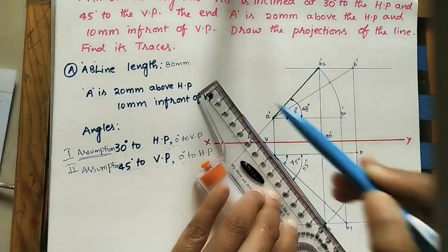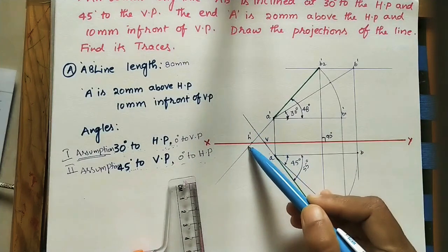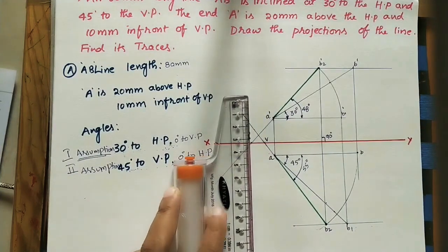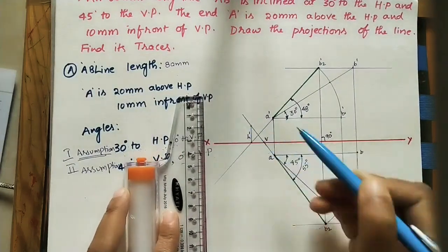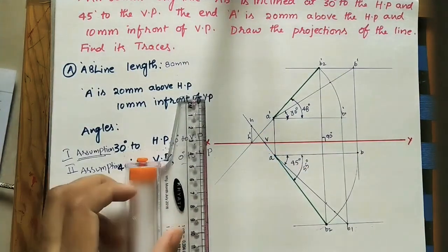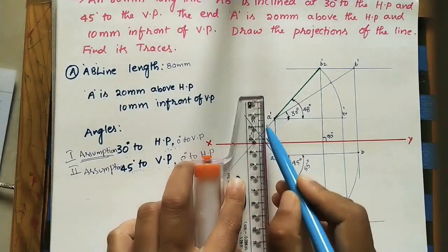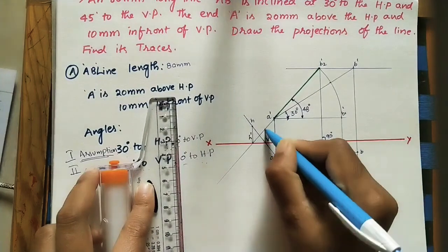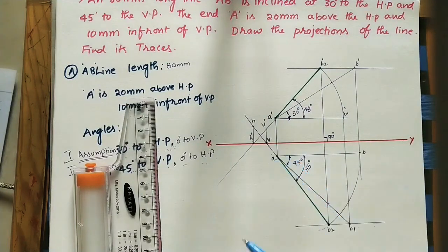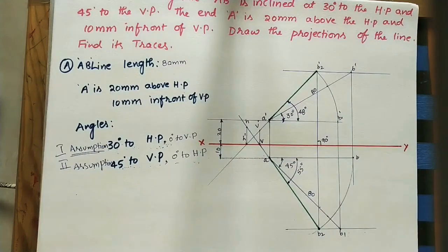Extend the final top view further upward to some height. At h-dash, draw a vertical line; where it meets the extended top view line gives point h — the horizontal trace. At v, use the reference line to find v-dash — the vertical trace. Remember: h-dash, h, and v-dash, v must each lie on the same projector line.